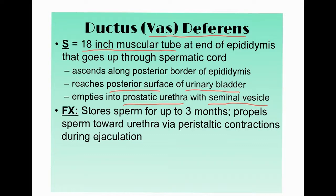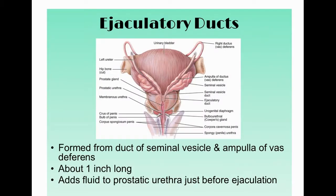The vas deferens stores sperm for up to two to three months and propels sperm toward the urethra via peristaltic contractions — rhythmic muscle contractions that move fluids along, similar to how peristalsis works in the digestive system.